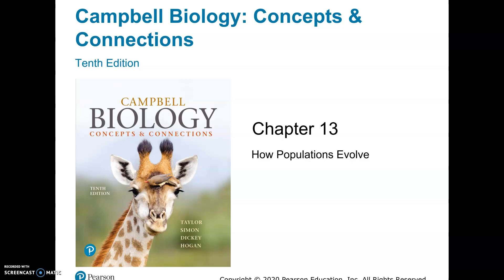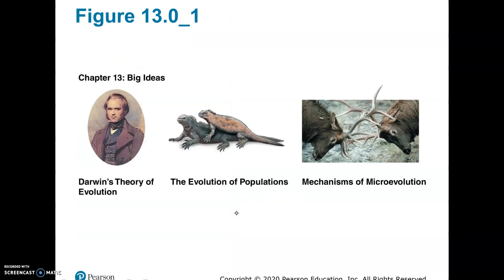Today we're starting our new chapter, which is on the topic of evolution. We're going to talk about Darwin's theory of evolution and the history of how that came about. We're going to talk about how populations evolve, and we're going to talk about mechanisms of what's called microevolution.